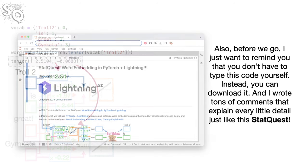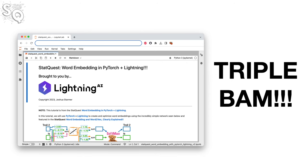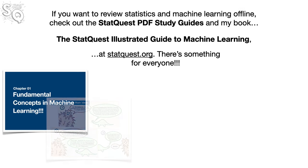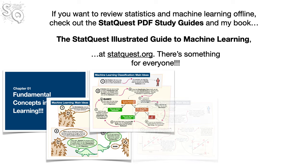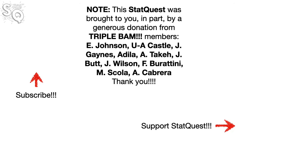Before we go, you don't have to type this code yourself — you can download it, with tons of comments explaining every detail, via the link in the pinned comment below. Triple bam! If you want to review statistics and machine learning offline, check out the StatQuest PDF study guides and the book 'The StatQuest Illustrated Guide to Machine Learning' at StatQuest.org. Please subscribe, and consider supporting StatQuest via Patreon, channel membership, songs, t-shirts, or donations. Until next time — quest on!